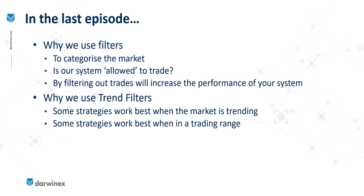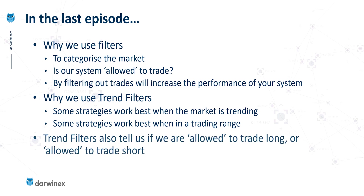With trend filters, it's a slightly more sophisticated rule than for volatility filters, for example. A volatility filter simply tells us whether we can trade or we can't. But with a trend filter, as well as doing that, it also informs us about whether we are allowed to trade long or only allowed to trade short, depending on the direction of the trend.